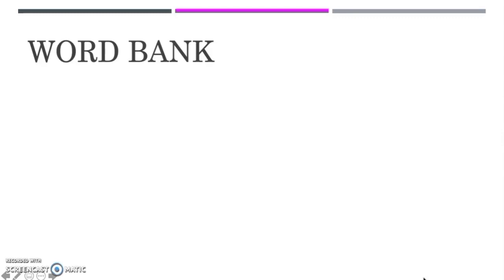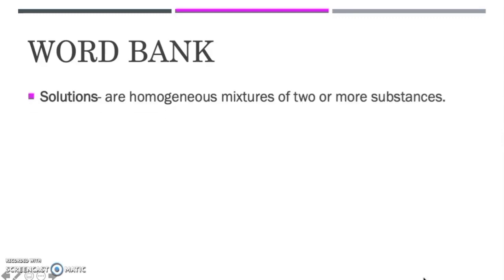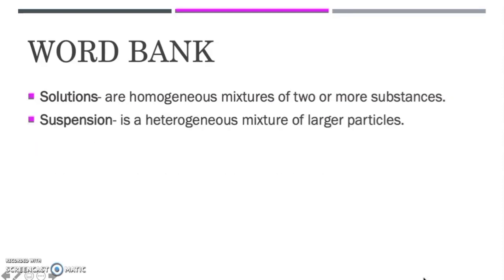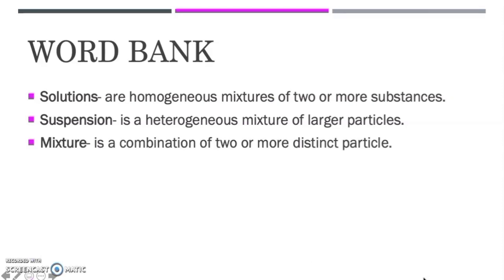We have the first word: Solutions. Solutions are homogeneous mixtures of two or more substances. We also have the word Suspension. Suspension is a heterogeneous mixture of larger particles. Next we have Mixture. Mixture is a combination of two or more distinct particles.